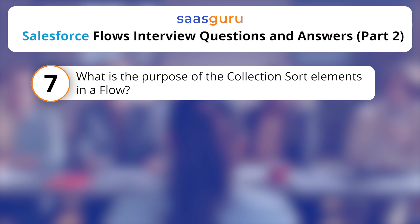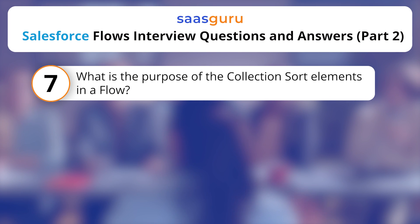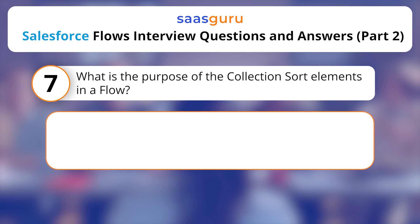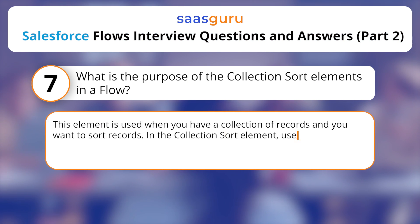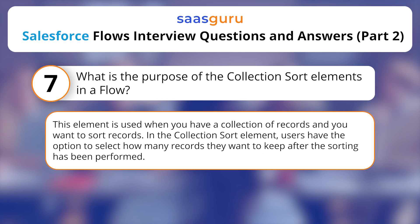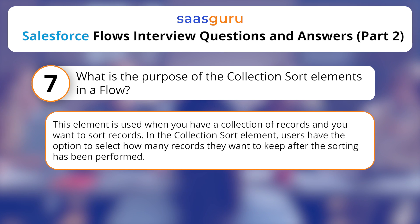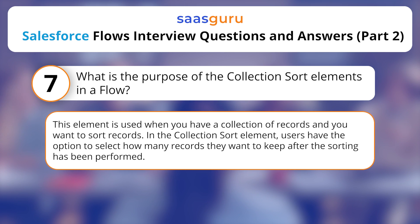What is the purpose of the collection sort element in a flow? This element is used when you have a collection of records and you want to sort them. In the collection sort element, users have the option to select how many records they want to keep after the sorting has been performed.